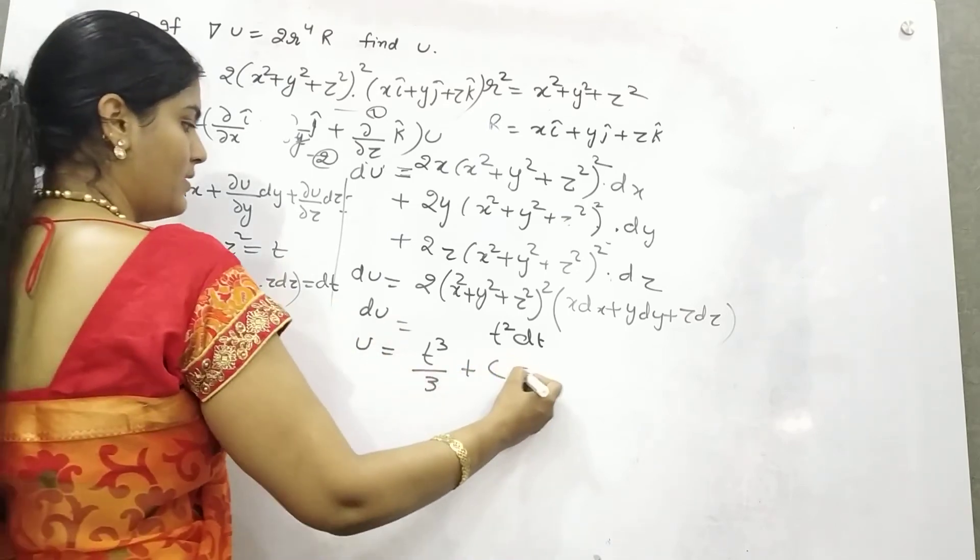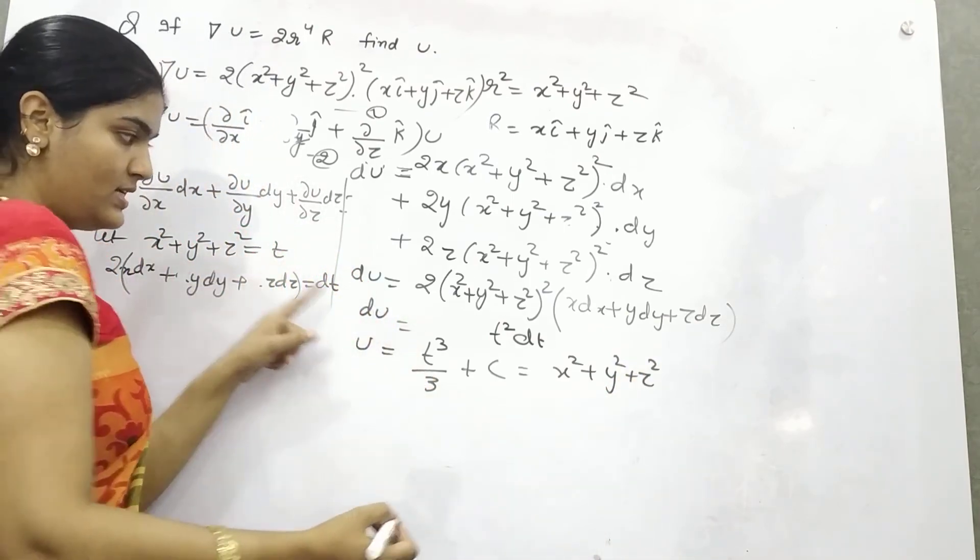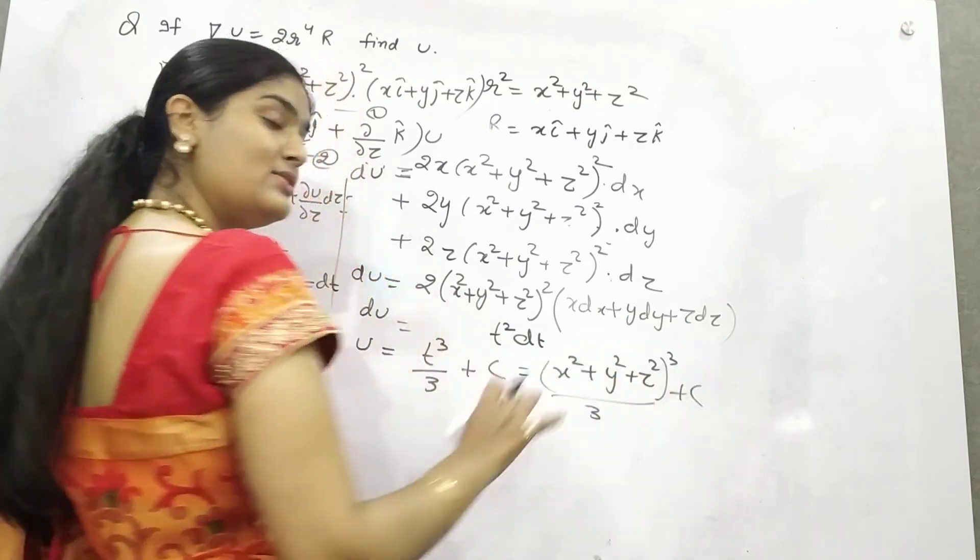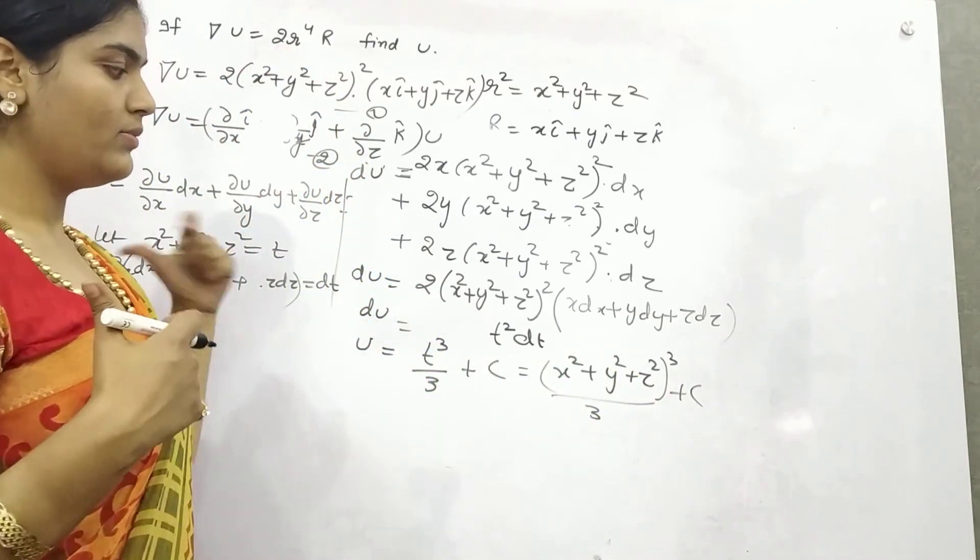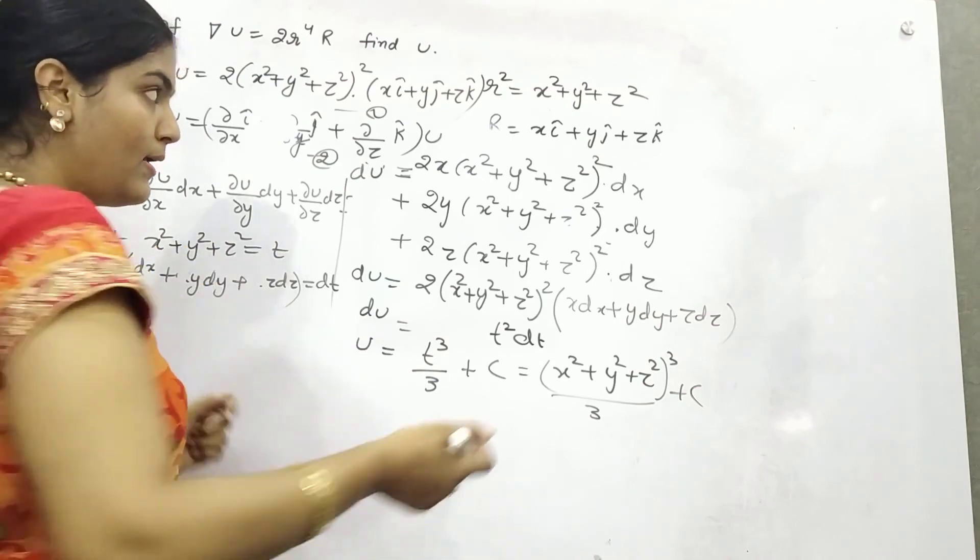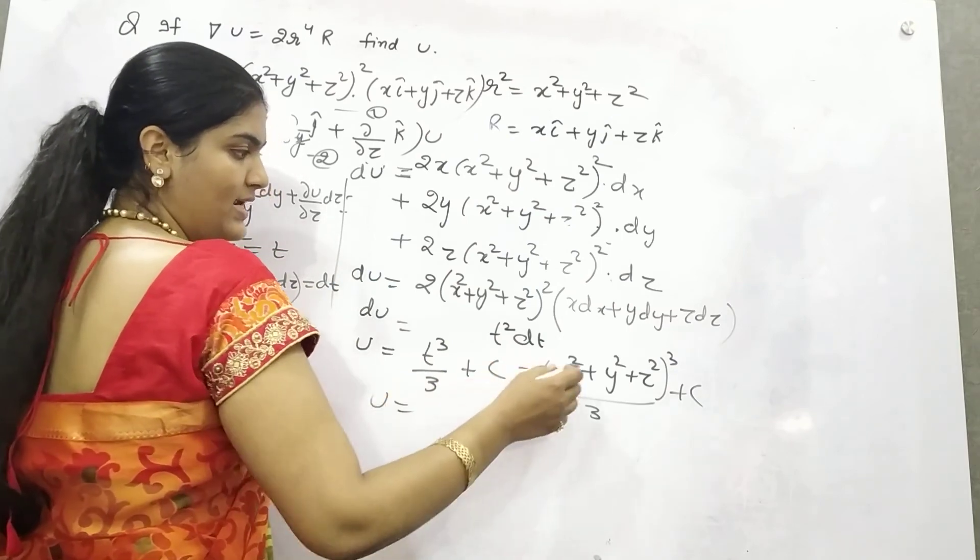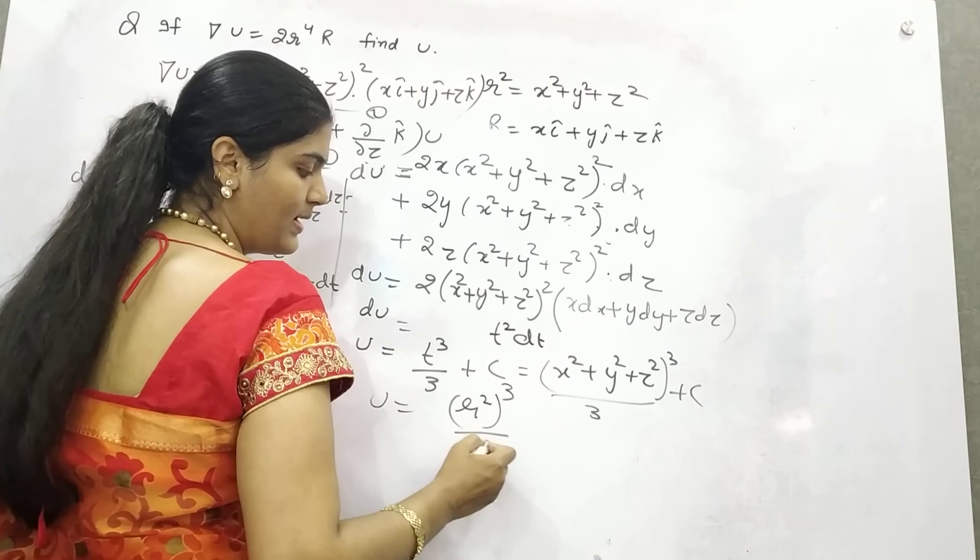Adding 1 power and dividing. What is t here? x² + y² + z², so (x² + y² + z²)³/3. This is your answer.